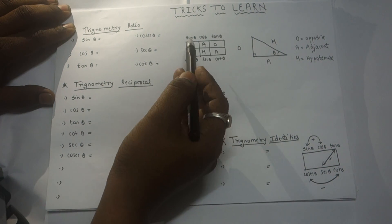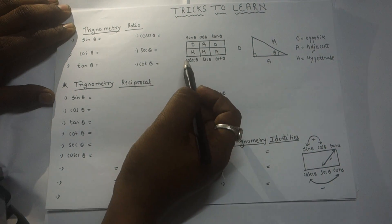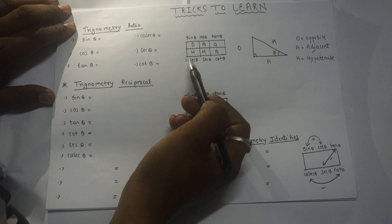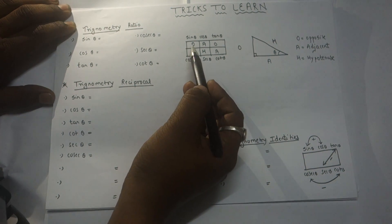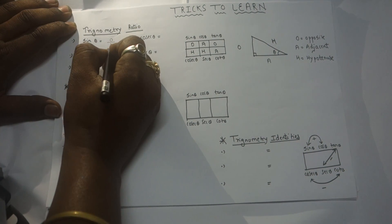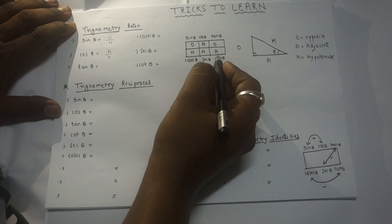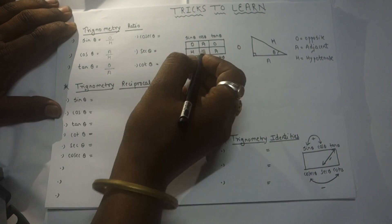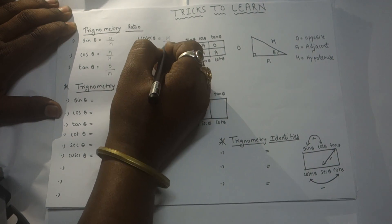Just keep this sequence in mind in alphabetical order: O, A, O, H, H, A. Keep this sequence like a song in your mind. For sin it is O upon H; for cos it is A upon H; for tan it is O upon A. For cot, the reverse: A upon O; for sec, the reverse: H upon A; for cosec, the reverse: H upon O. That's it.